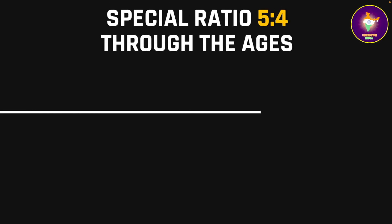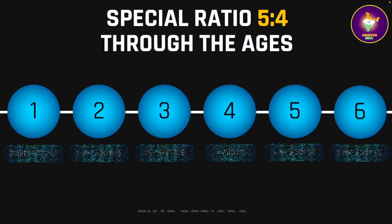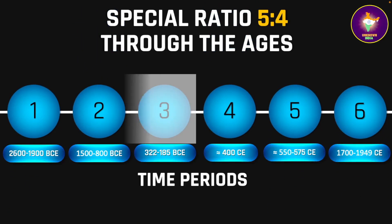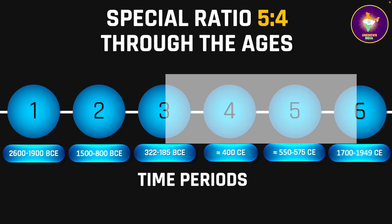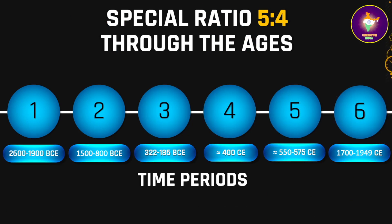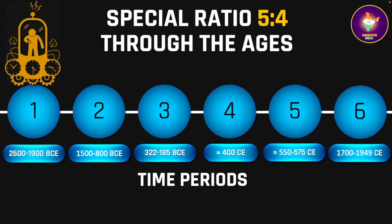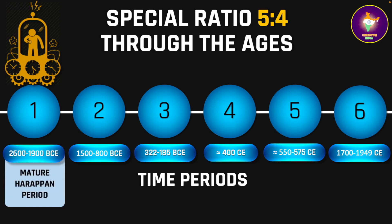We shall travel in time to six different time periods — three before the common era and three in the common era. Let us use a time machine and go back in time to 4,600 to 3,900 years ago, that is, 2600 to 1900 BCE — the mature period of the Harappan or Indus Valley civilization.